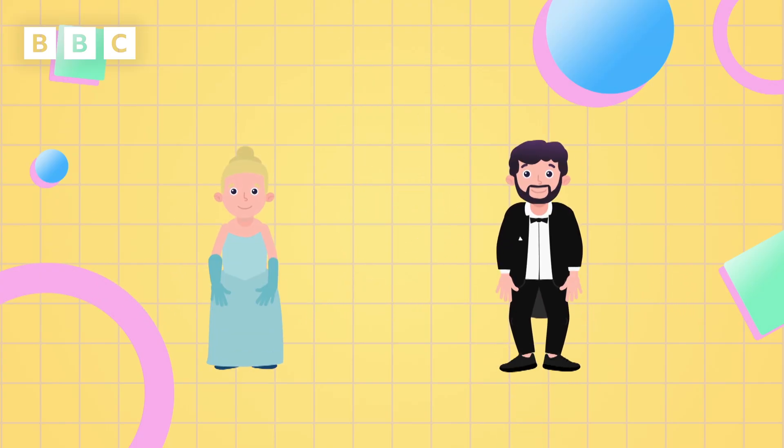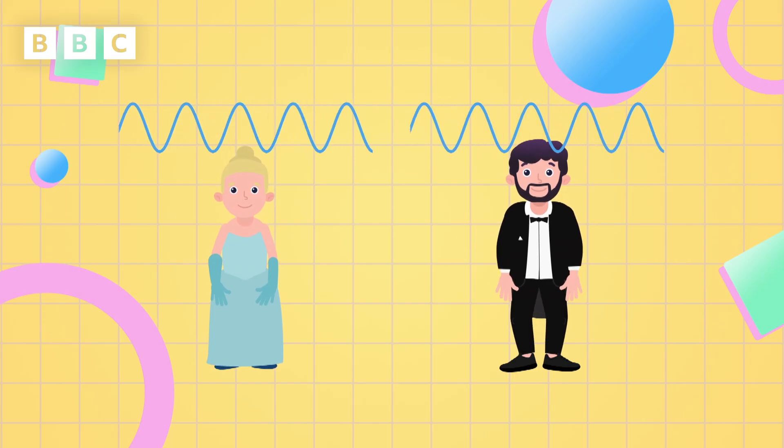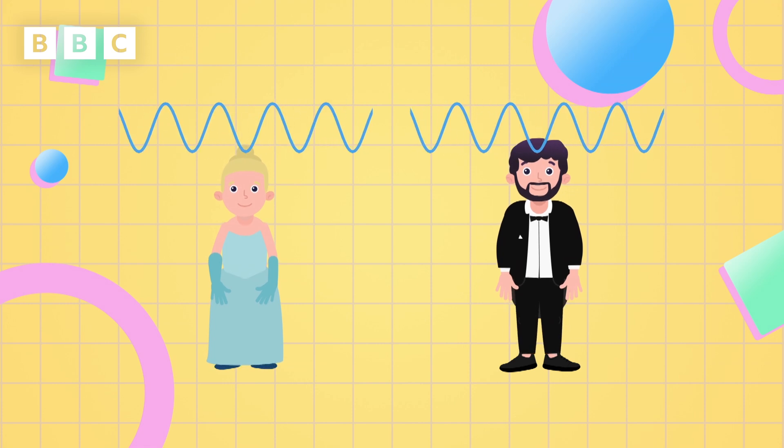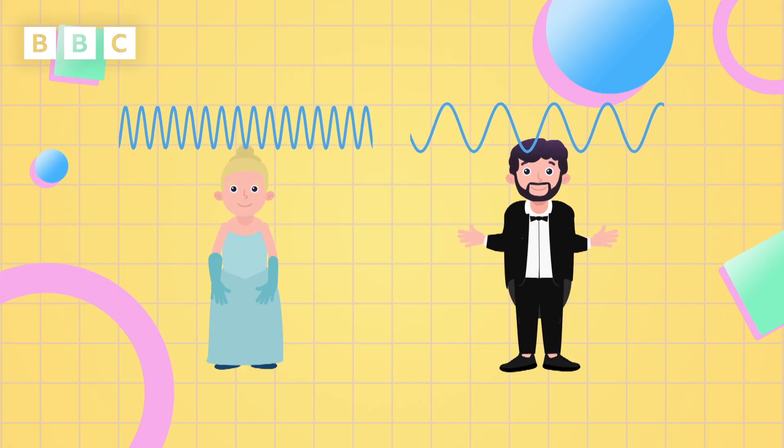Pitch tells us how high, or how low, a sound is. The pitch of a sound depends on how fast, or how slow, the vibrations are. The faster the vibrations, the higher the pitch, and the slower the vibrations, the lower the pitch.